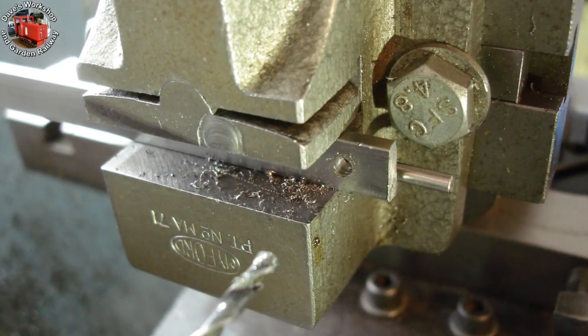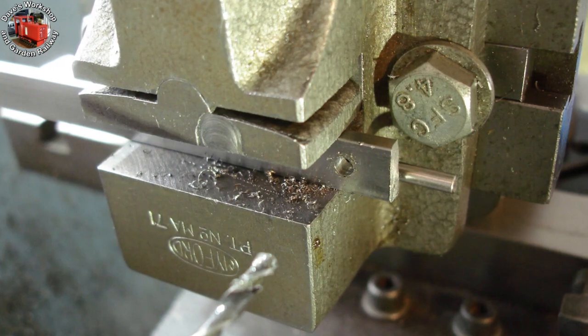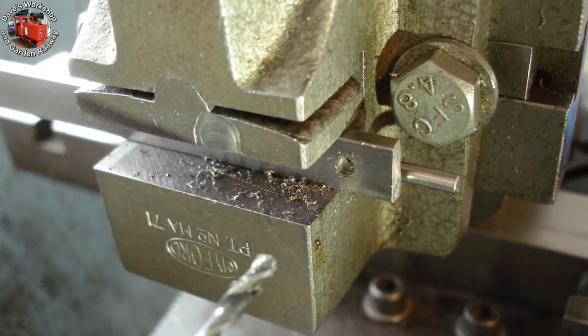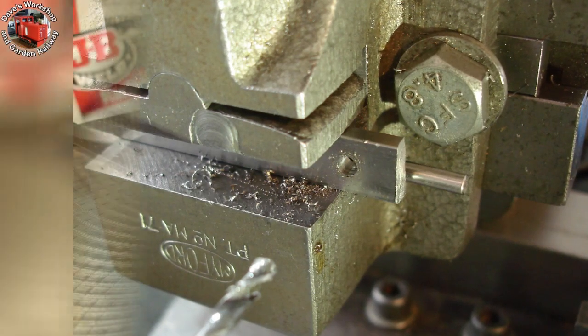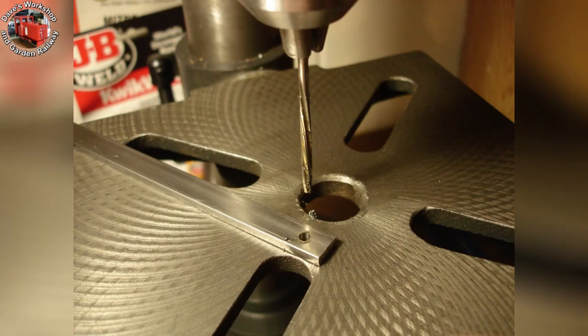The hole was center drilled BS1, drilled through 1.2mm, then 2.9mm, then finally 3.1mm for later reaming. Straight after reaming through 1/8th inch.